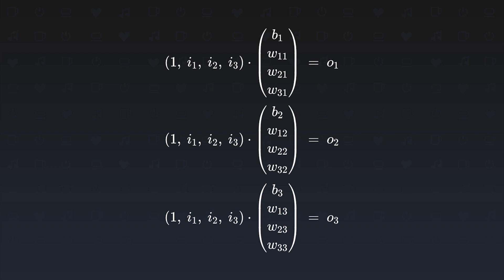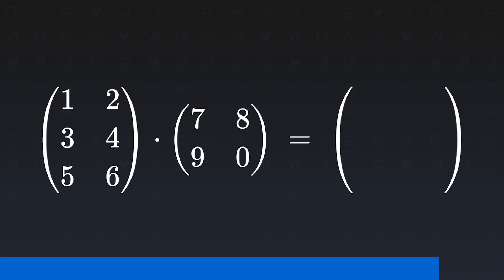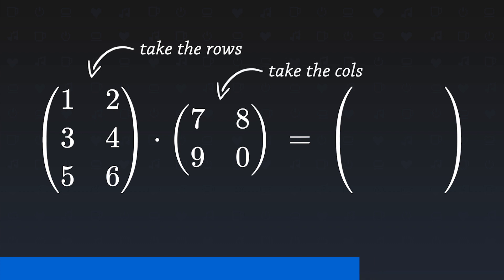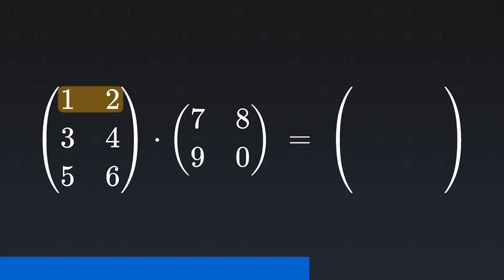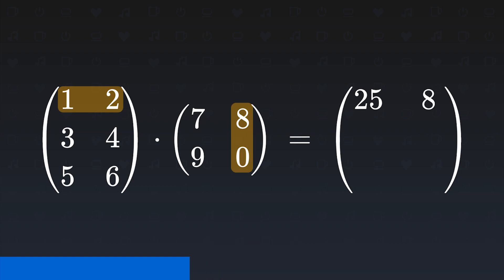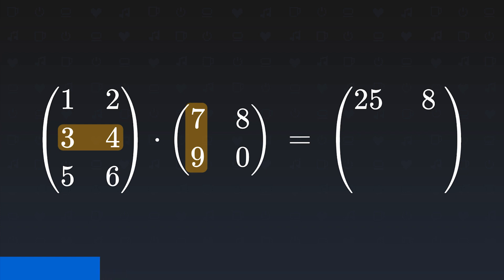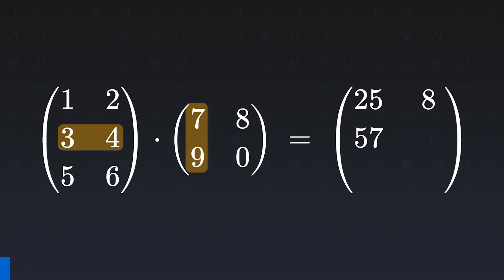If we write the weights in column vectors instead, then it's a matrix multiplication. Matrix multiplication works like this: for two matrices [1,2,3,4,5,6] and [7,8,9,0], we dot product each row of the first matrix with each column of the second. For the first element in the first row of the result, we dot product the first row and first column: 1×7 + 2×9 = 25. For the second element, first row and second column: 1×8 + 2×0 = 8. For the second row, first element: 3×7 + 4×9 = 57. Let's quickly do all remaining combinations.